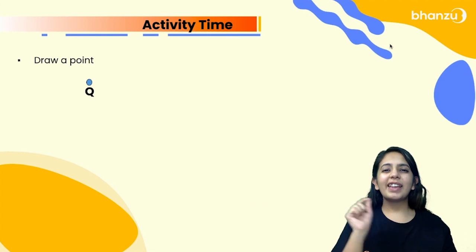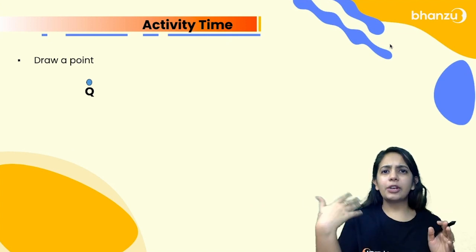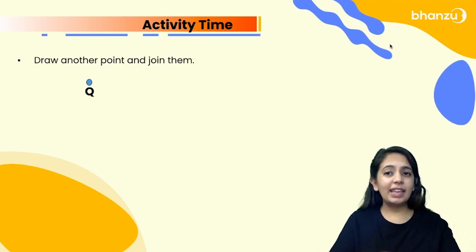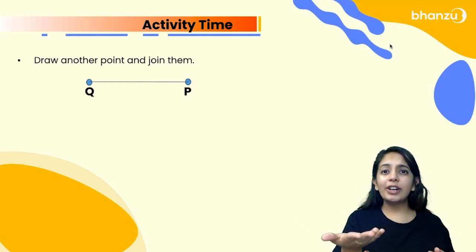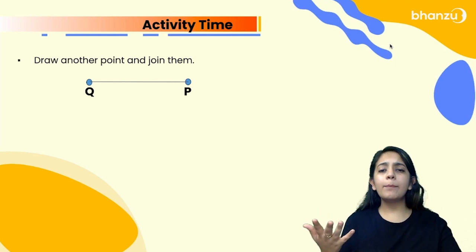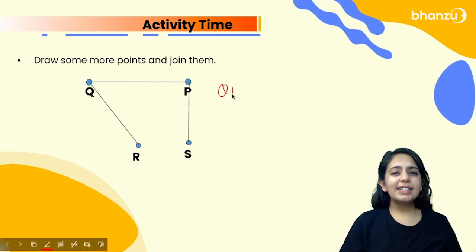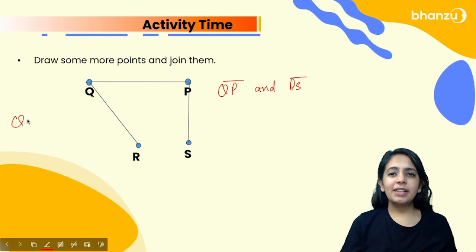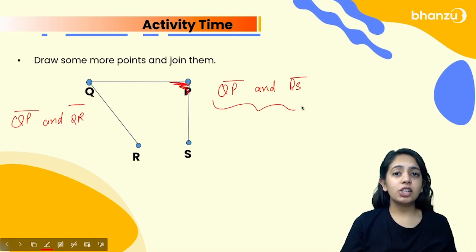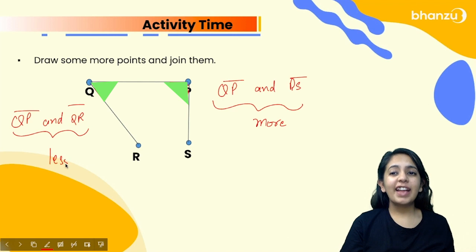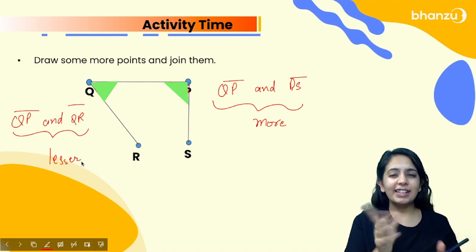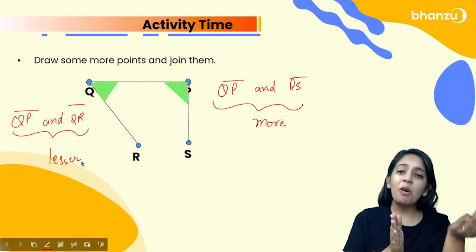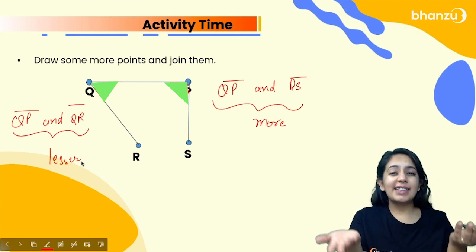Let's start with an activity. Let's draw a point Q, then another point P, and join them — you get a line segment. Now let's draw some more points and join them. The line segments QP and PS are bent differently than QP and QR — the space between QP and PS is more, whereas the space between QP and QR is lesser. This space is called an angle. Therefore, the angle between QP and PS is greater, while the angle between QP and QR is lesser.